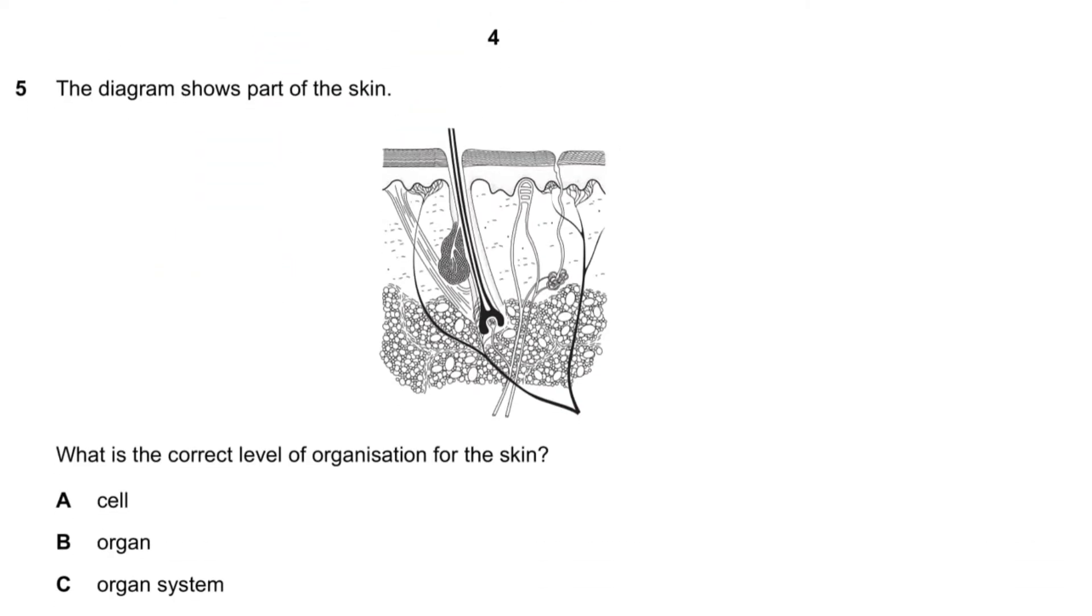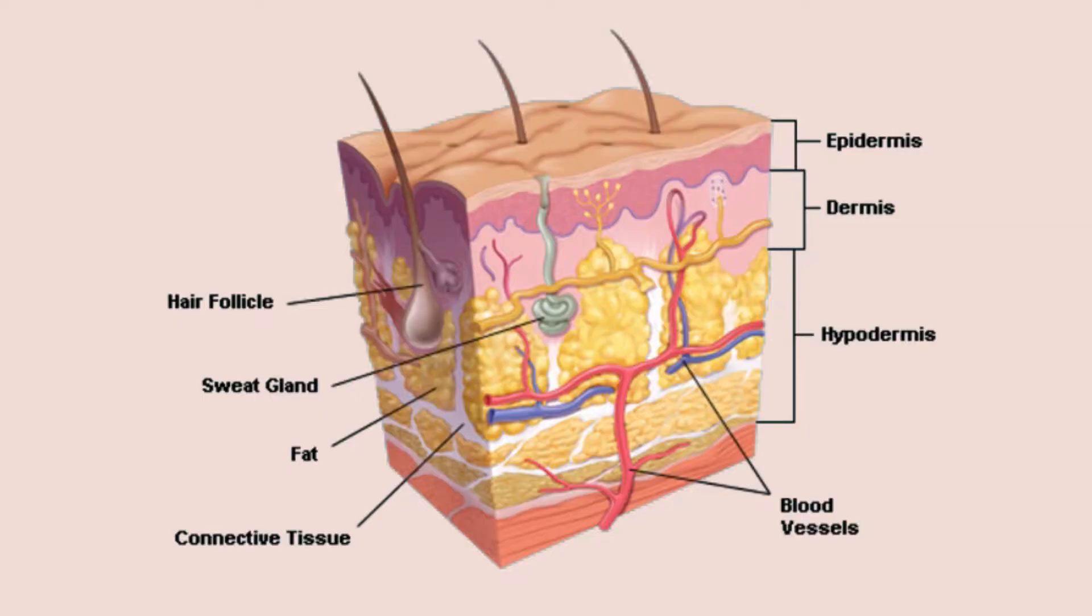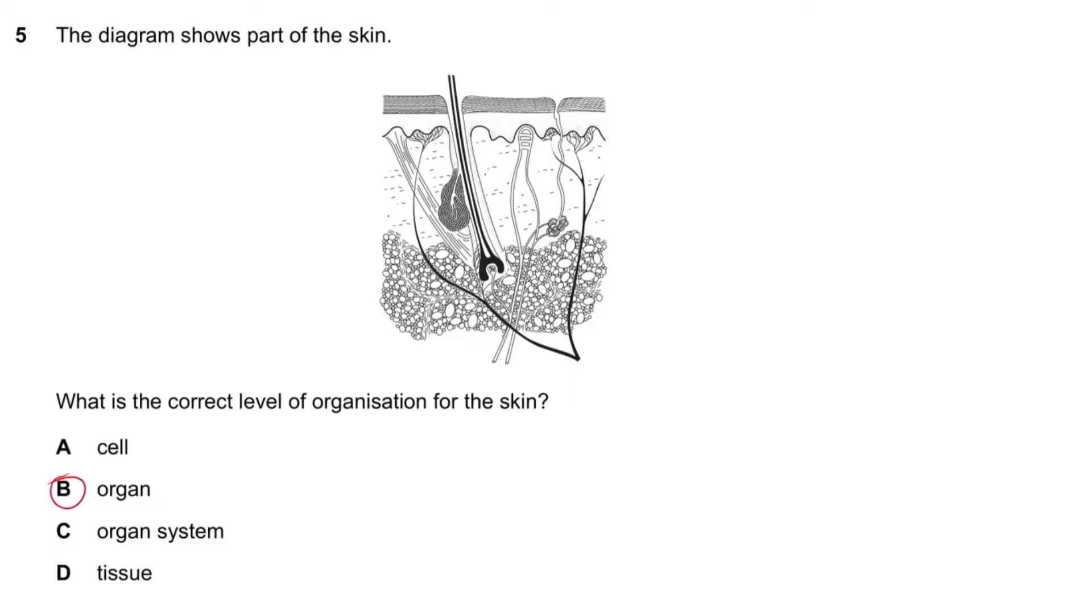Question number five says the diagram shows part of the skin. What is the correct level of organization for the skin? It's an organ. Something that you just have to know because there's multiple tissues. An organ is basically made of a group of tissues.